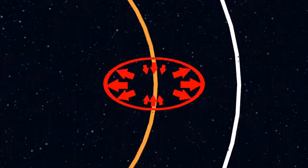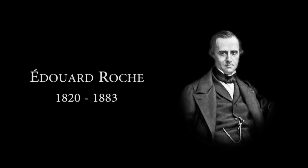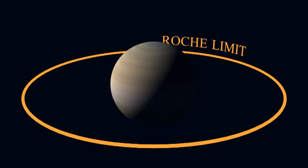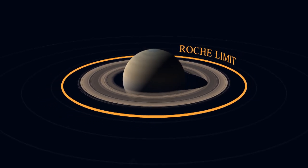The place where this happens is called the Roche Limit, named after Edouard Roche, who discovered it. Inside the Roche Limit, you get rings. Outside the Roche Limit, you get moons.